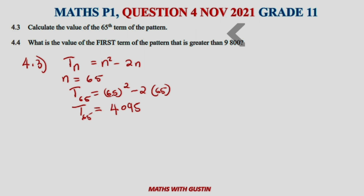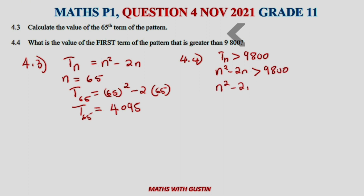4.4 asks for the first term of the pattern that is greater than 9800. Using our equation, we need tn greater than 9800, so n squared minus 2n greater than 9800, which gives n squared minus 2n minus 9800 greater than zero. We need to factorize this trinomial.